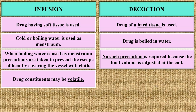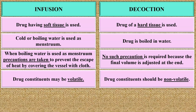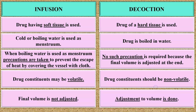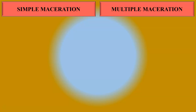In case of infusion, the drug constituents may be volatile, whereas in decoction, the drug constituents should be non-volatile. In infusion, the final volume is not adjusted, whereas in decoction, the adjustment to volume is done. This is the difference between the two extraction processes — infusion and decoction.